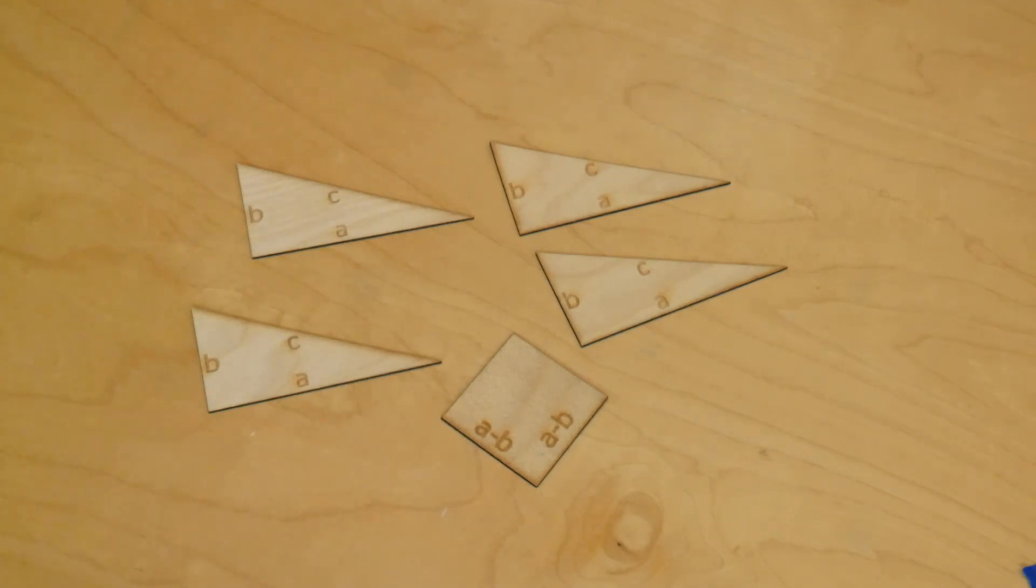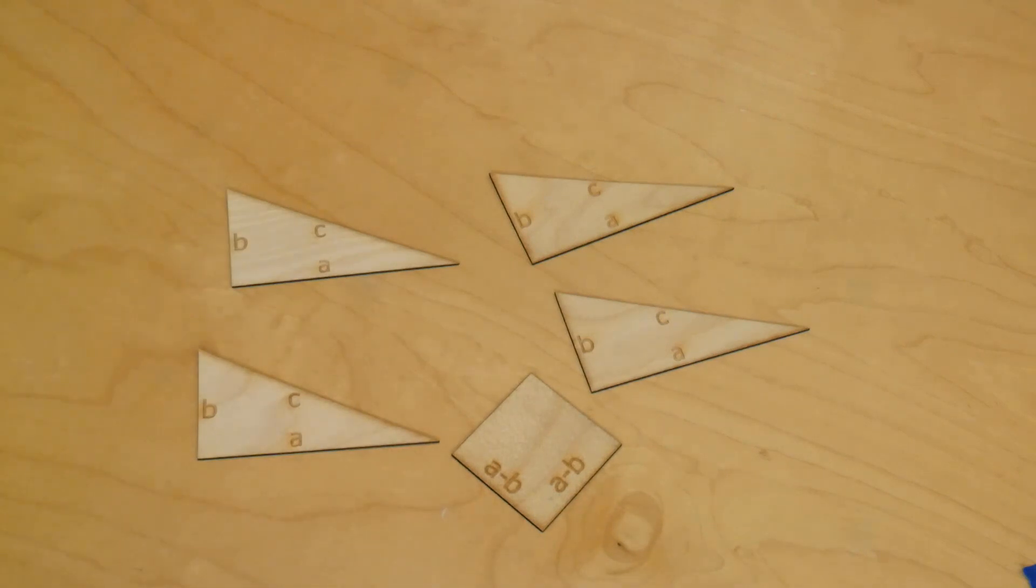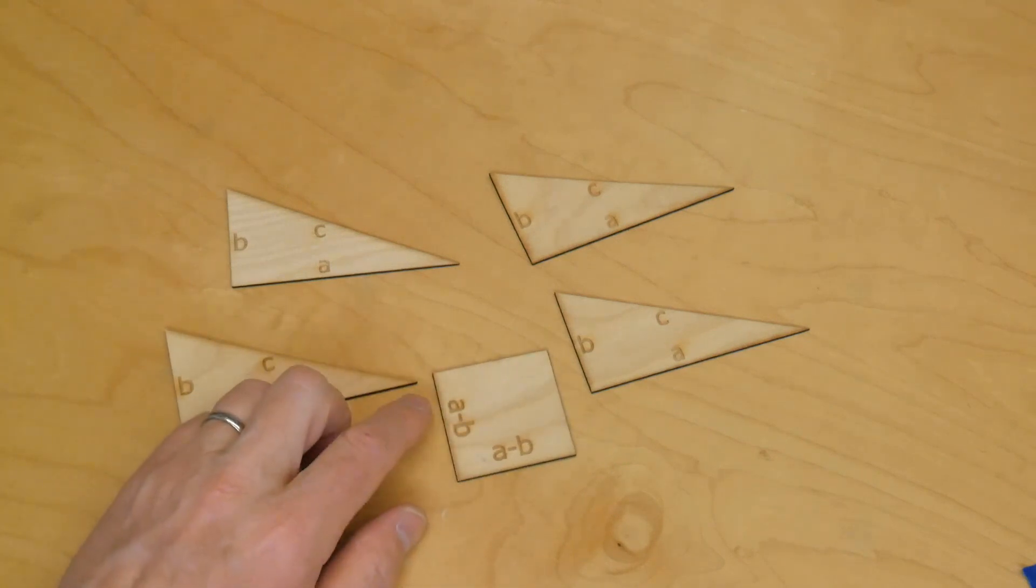The fun one is, we're going to start with these little shapes here. These are right triangles, and this little thing is a square. So the right triangles are a, b, and c, and the little square has sides a minus b. Now it doesn't matter what a, b, and c are. They can be any values as long as they form a right triangle.